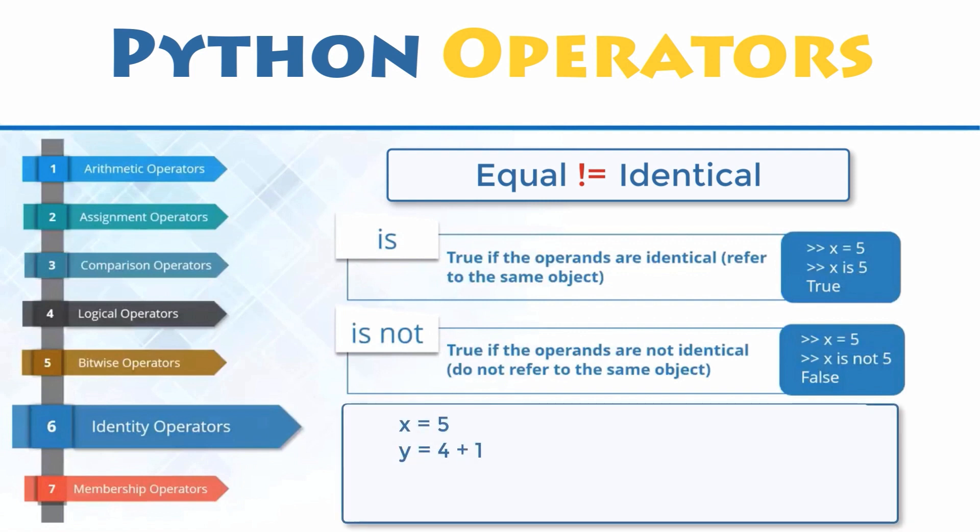Here is an example of two objects that are equal but not identical. X and Y both refer to objects whose value is 5. They are equal, but they do not reference the same object. As you can verify, X and Y do not have the same identity, and X is Y returns false.